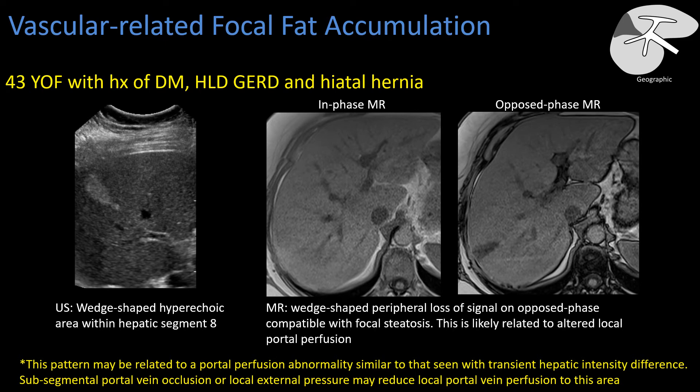Here we see a wedge-shaped hyperechogenic area within the liver, and we can see that it corresponds to focal fat on opposed phase imaging, likely due to a small thrombosed portal vein branch.